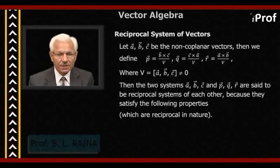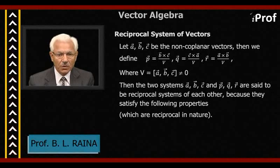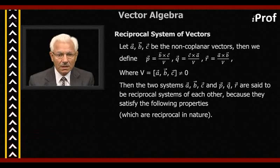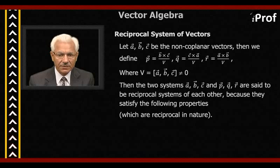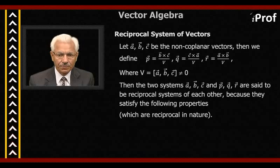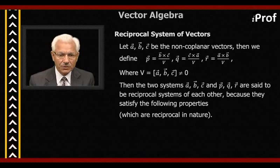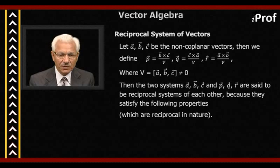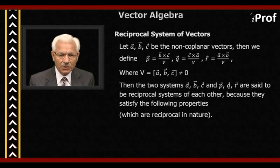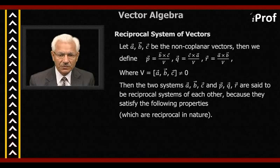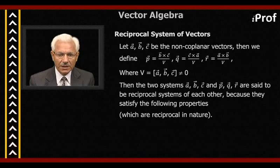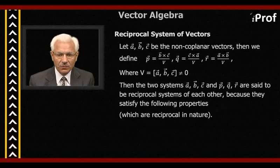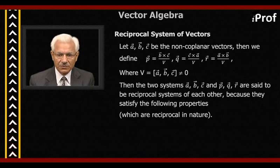The next concept is reciprocal system of vectors. Let A, B, C be three non-coplanar vectors. Then we define P equal to B cross C divided by V, Q equal to C cross A divided by V, and R equal to A cross B divided by V, where V is equal to the triple scalar product of A, B, C, which is not zero.